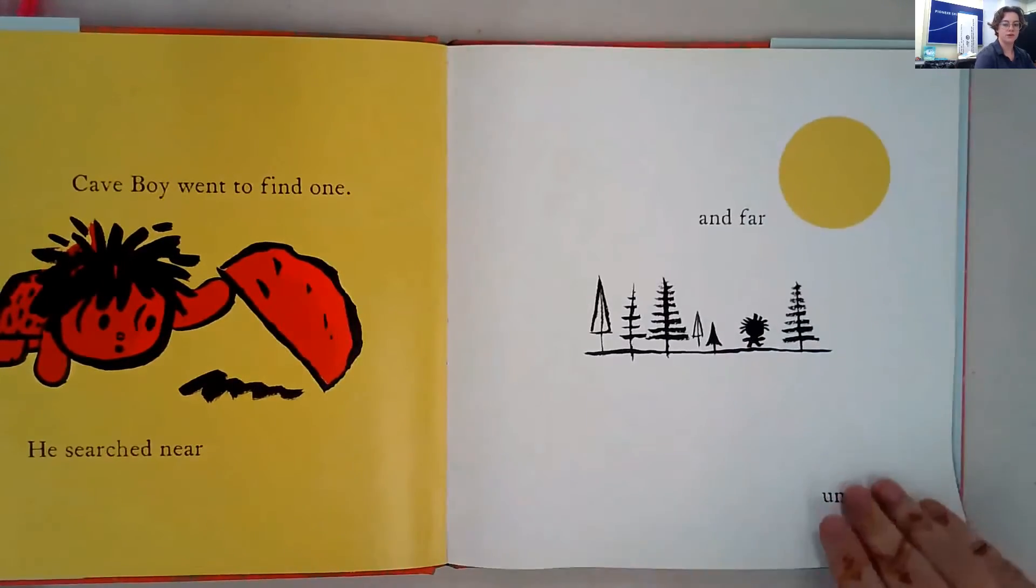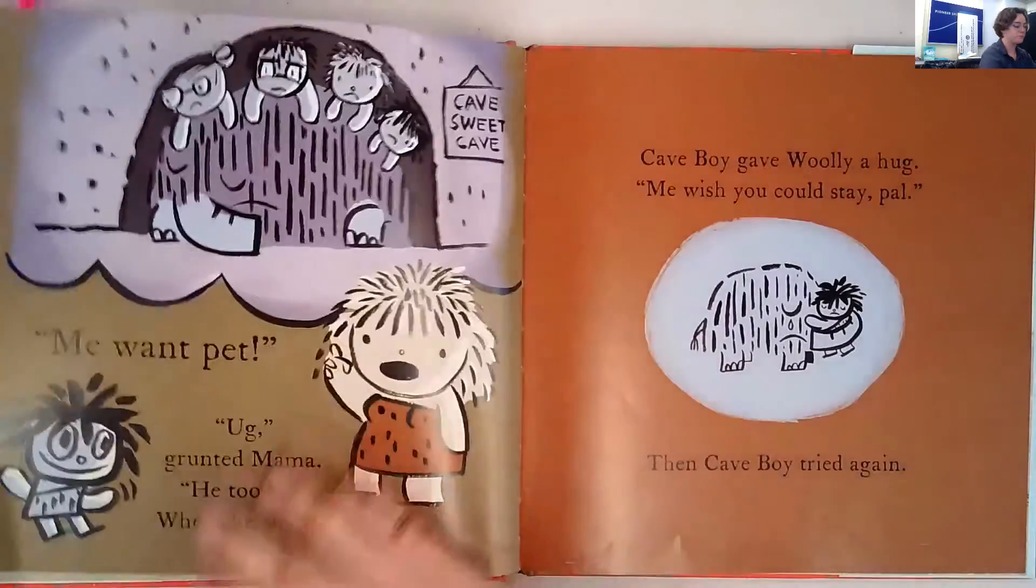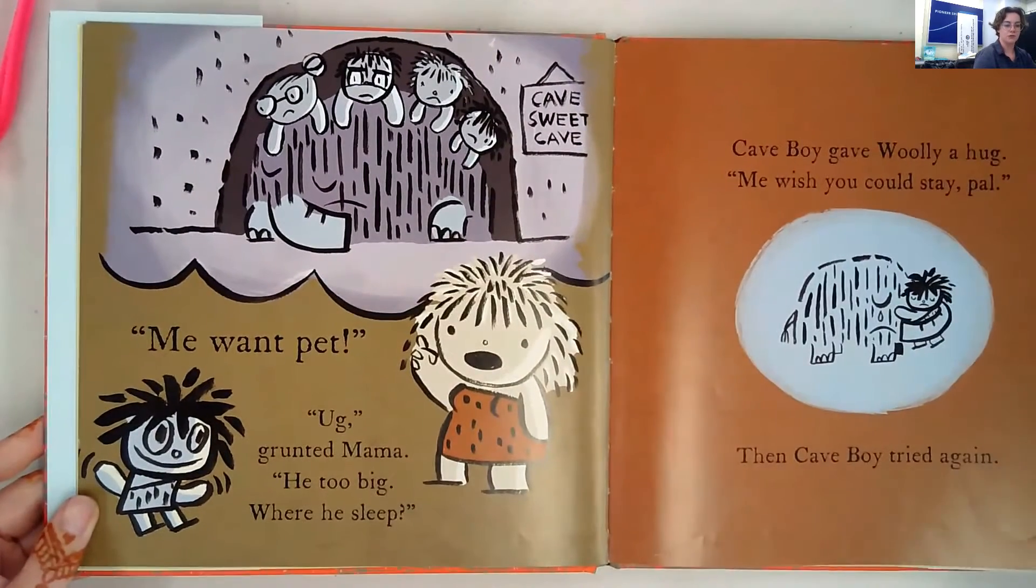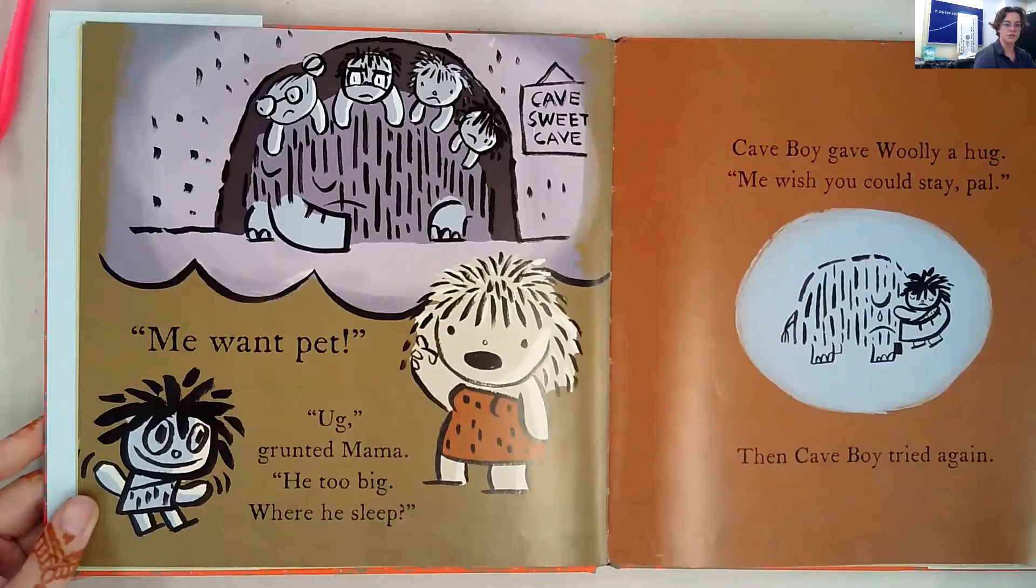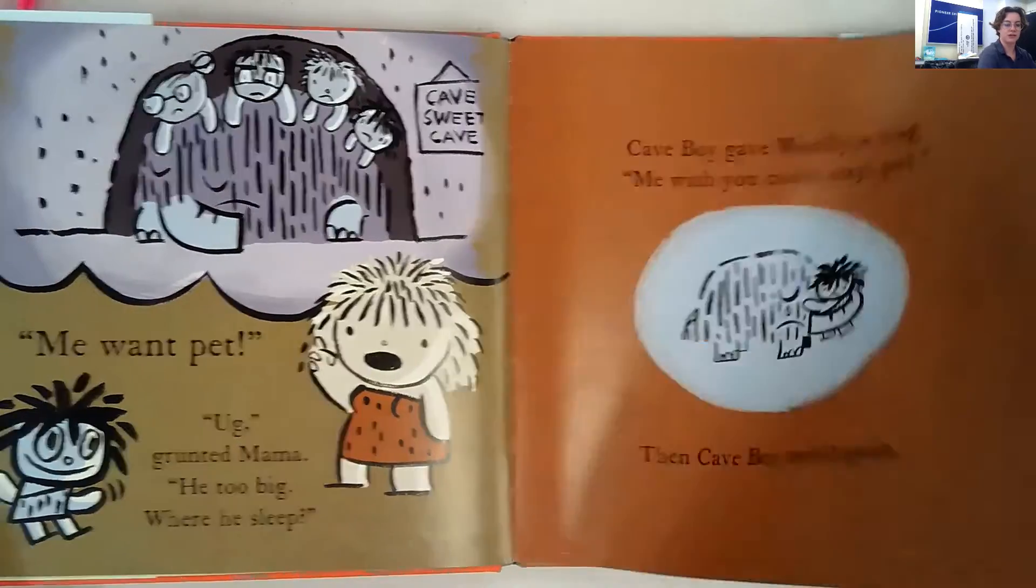Cave boy went to find one. He searched near and far until he found a woolly mammoth. Cave boy rode woolly home. 'Me want pet,' grunted mama. 'He too big. Where he sleep?' Cave boy gave woolly a hug. 'Me wish you could stay, pal.' Then cave boy tried again.